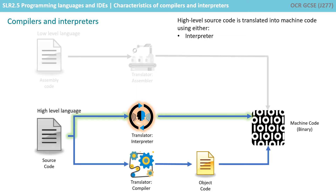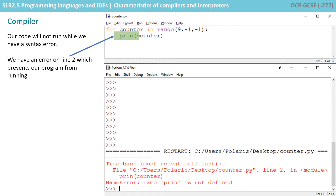High-level language source code can either be translated into machine code using an interpreter or a compiler. So let's take a look at the difference.